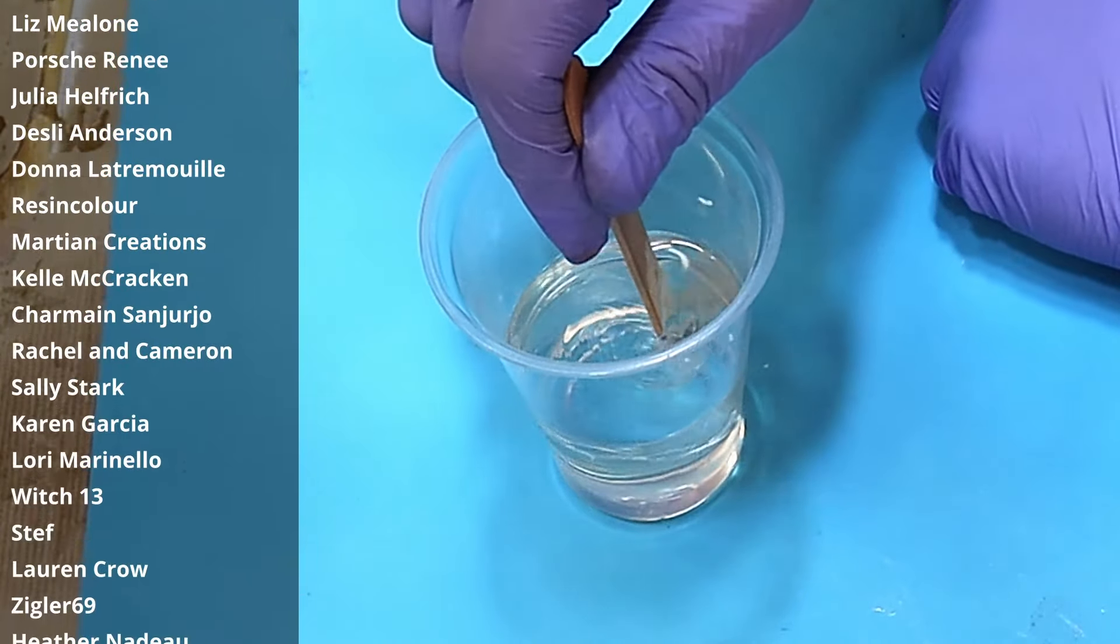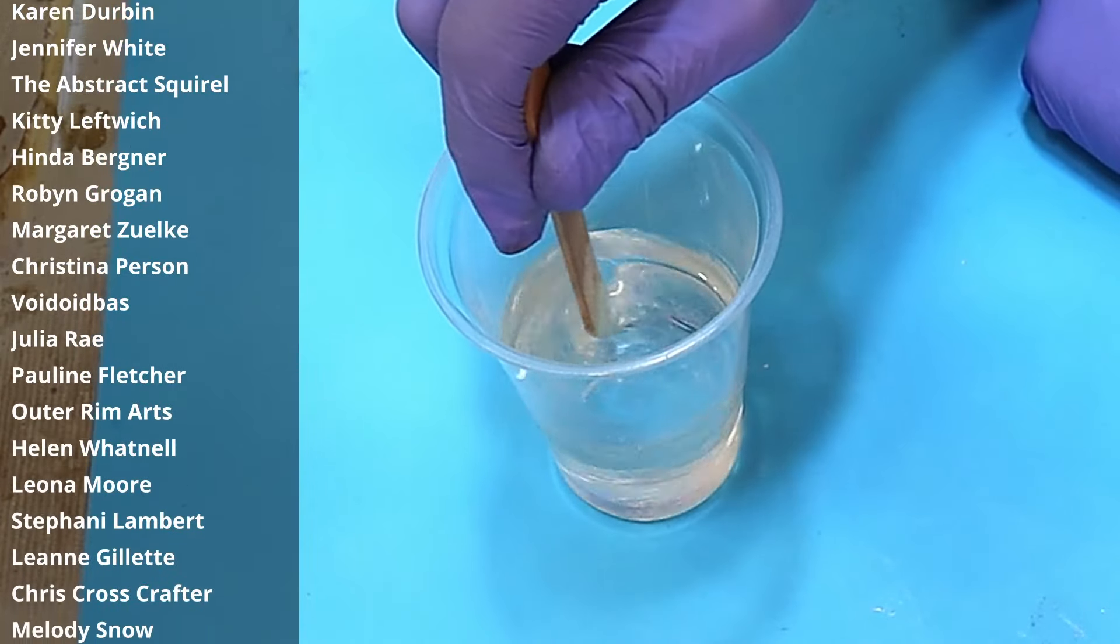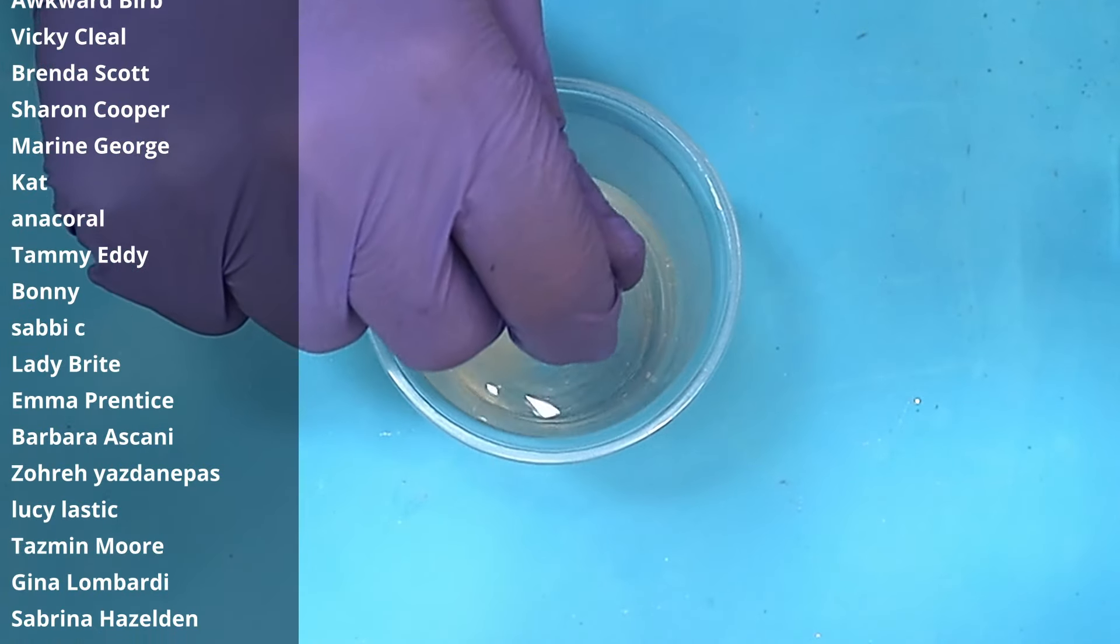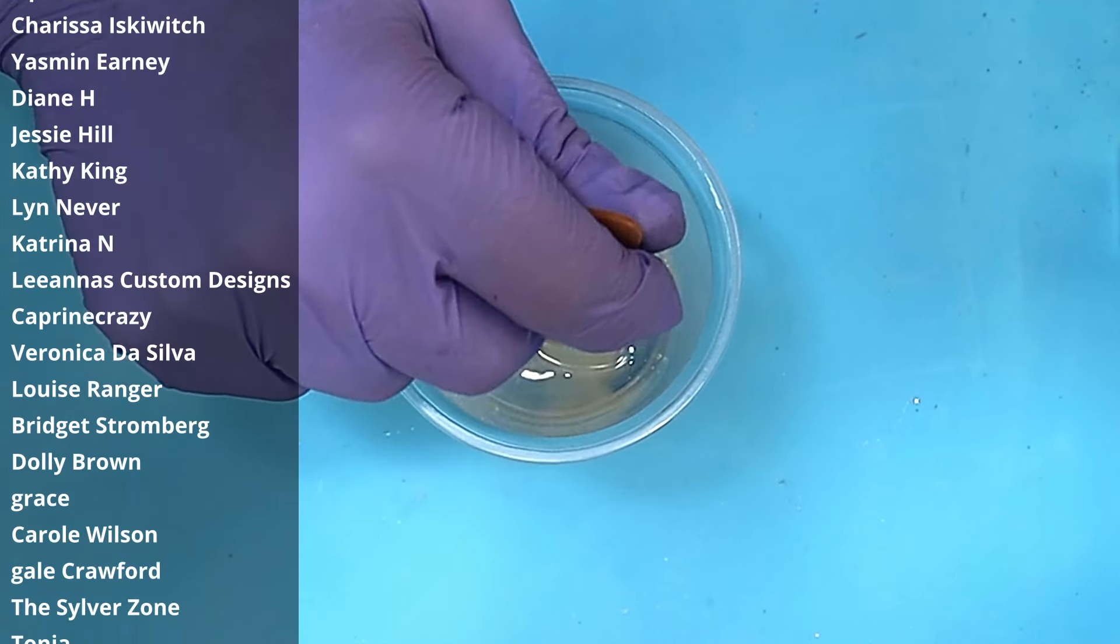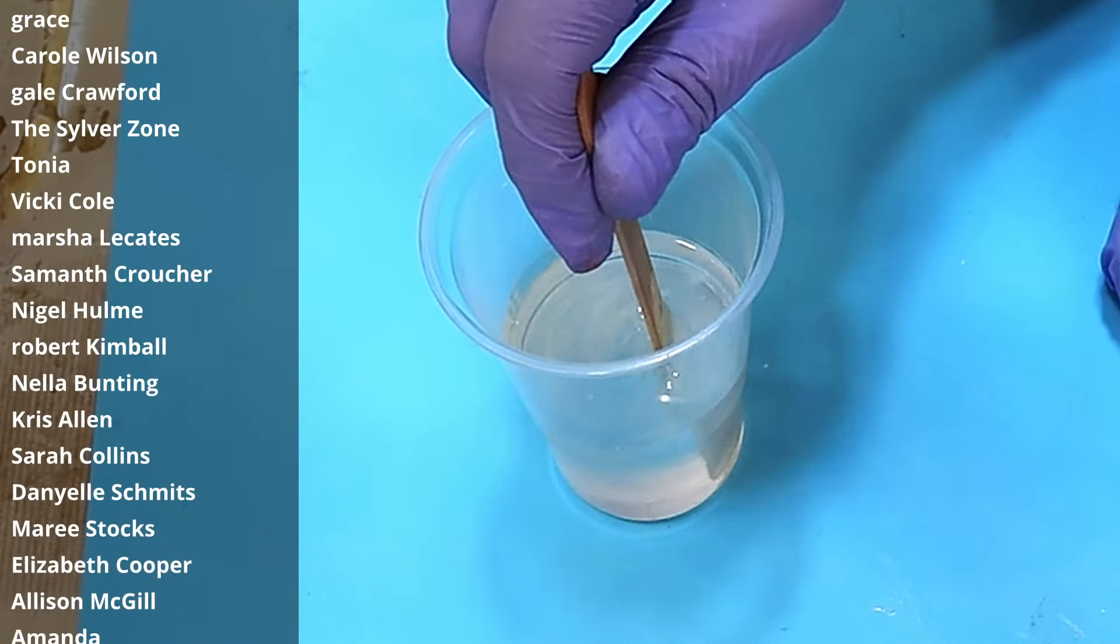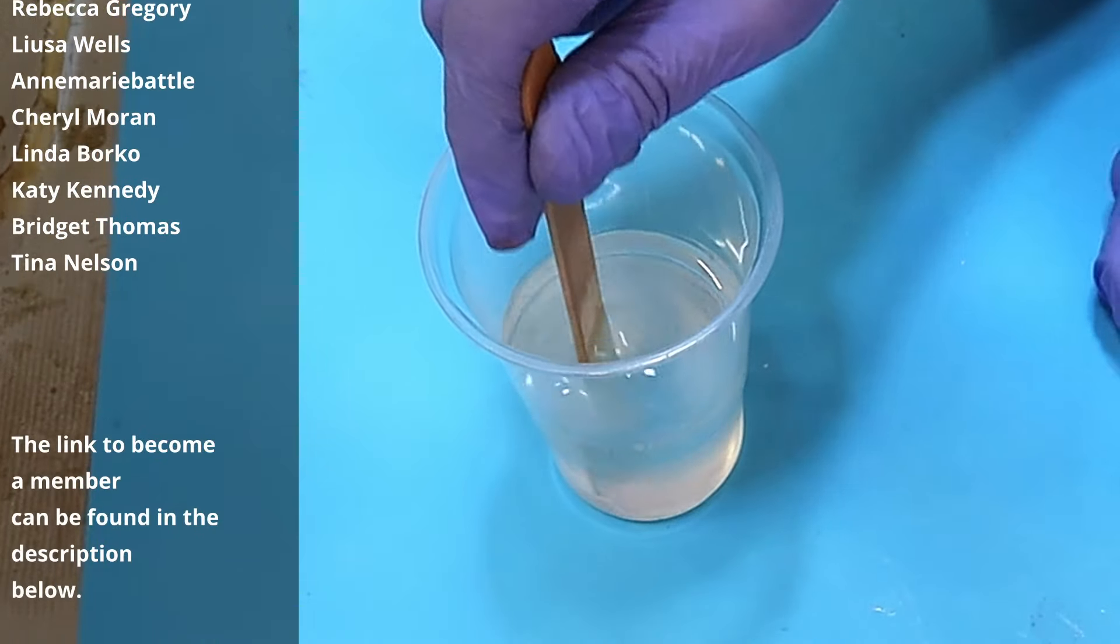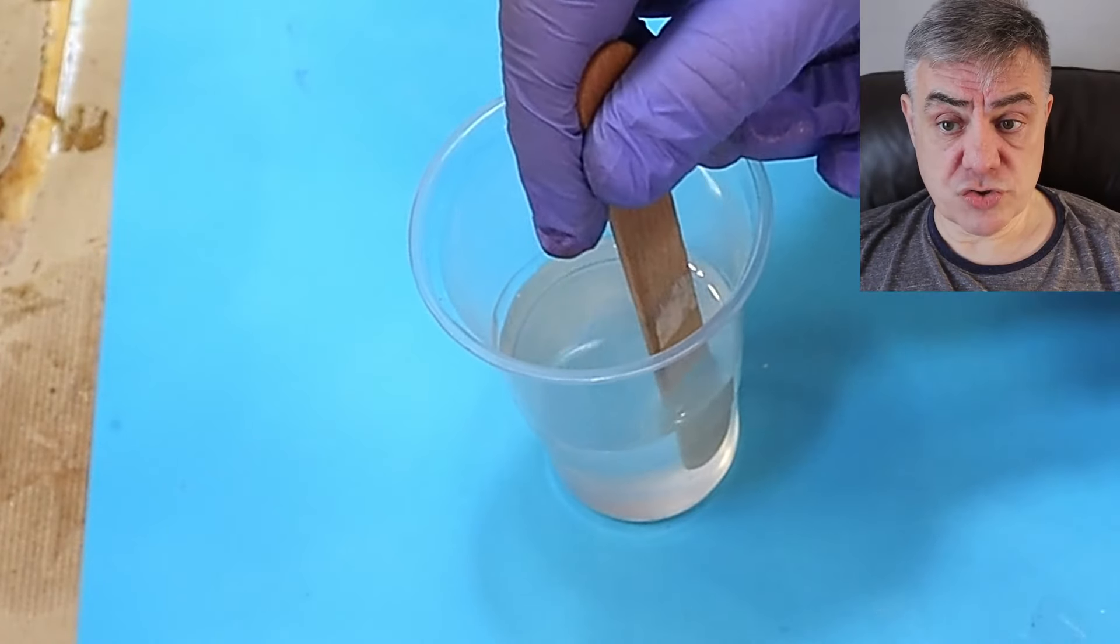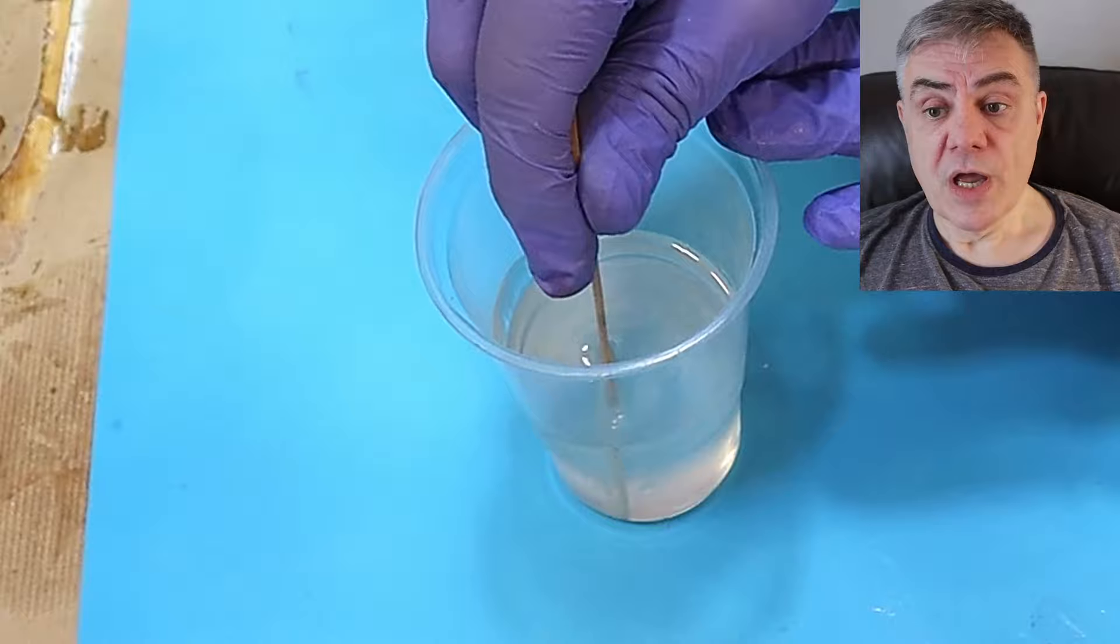When stirring the resin, it's important to stir it slowly at about this speed. I very rarely take the stick off the bottom and I make sure that I go around the whole of the bottom to ensure that there are no bits stuck there of part A that isn't mixed in with part B. I also go around and scrape all the sides slowly, again keeping that stick on the bottom.